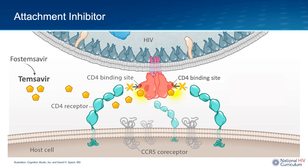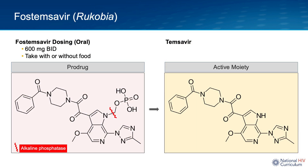Fostemsevir is an HIV attachment inhibitor. Note that Fostemsevir is a pro-drug that is converted to Temsevir, which is the active form of the drug. Temsevir binds to HIV GP120 near the CD4 binding site and prevents the normal GP120 conformational change required during the attachment step. Fostemsevir is dosed 600 mg twice daily orally and can be taken with or without food; in the GI tract, the enzyme alkaline phosphatase converts Fostemsevir to the active moiety Temsevir.